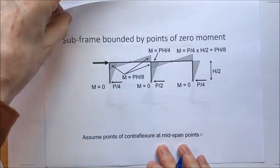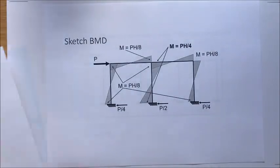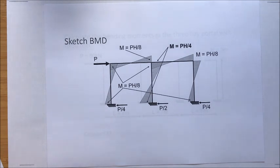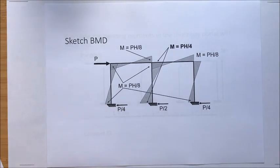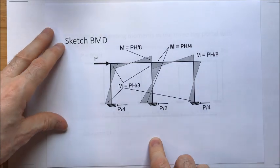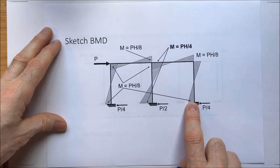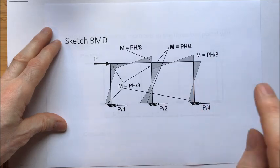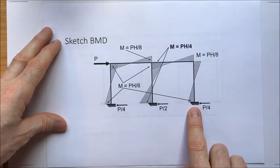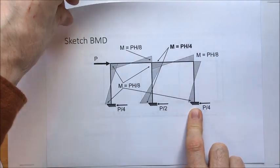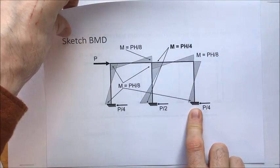So much for the upper frame. Rather than analyzing the lower frame separately, let's combine everything together. We know that the bending moment at the top of each lower column stub equals the bending moment at the bottom of the upper frame, because the cut was made at the center. There is the final bending moment diagram for the entire structure.